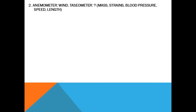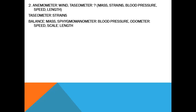Anemometer — wind. Taseometer — what? Options: mass, strains, blood pressure, speed, length. Autometer — strains. Balance — mass. Sphygmomanometer — blood pressure. Speedometer — speed. Scale — length.